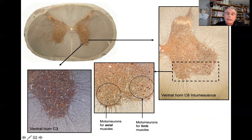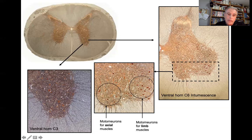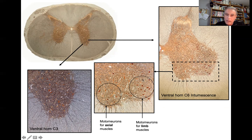The aspect of the ventral horn is not the same in all spinal segments. In segments not involved in the cervical intumescence, we have motor neurons only for axial muscles. However, at the level of the cervical or lumbar intumescence, there are more motor neurons — two large accumulations. On the lateral aspect of the ventral horn there is an accumulation of motor neurons for limb muscles, and on the medial aspect the motor neurons for axial muscles. So the increase in motor neurons at the intumescence level is located on the lateral aspect of the ventral horn.